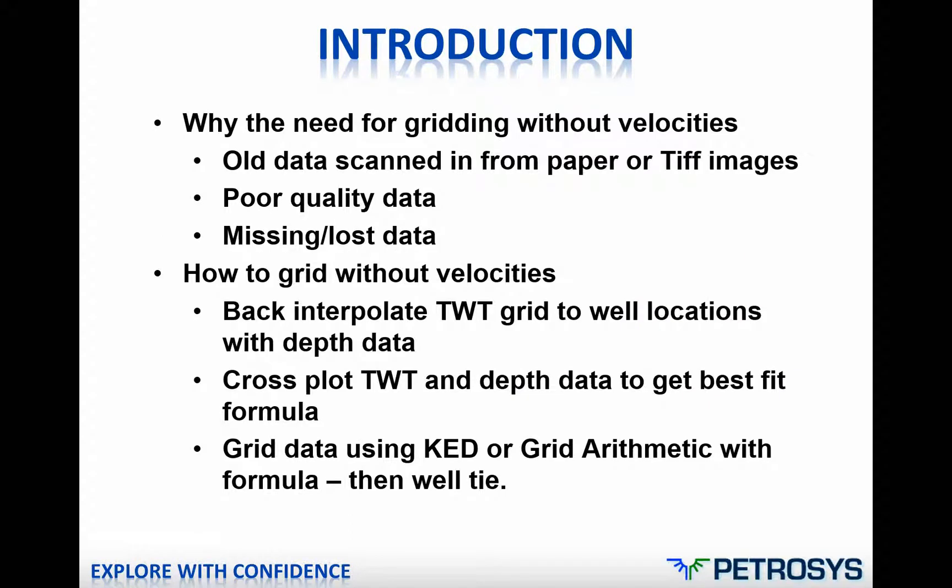Why do we need to do gridding without velocities? In some cases we have old data which are paper-scanned images. We've scanned our images in from a paper seismic line and only have the navigation data and the two-way time data to create our two-way time image from. Or we may have poor quality, missing, or lost data.